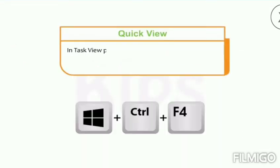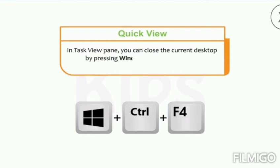Note this important point: in the Task View pane you can close the current desktop by pressing Windows key plus Control plus F4 shortcut key combination.